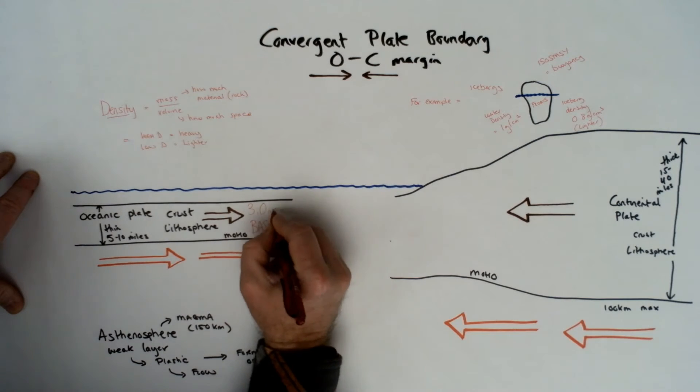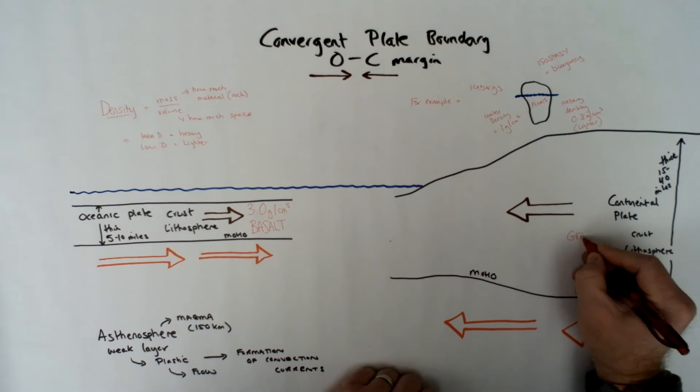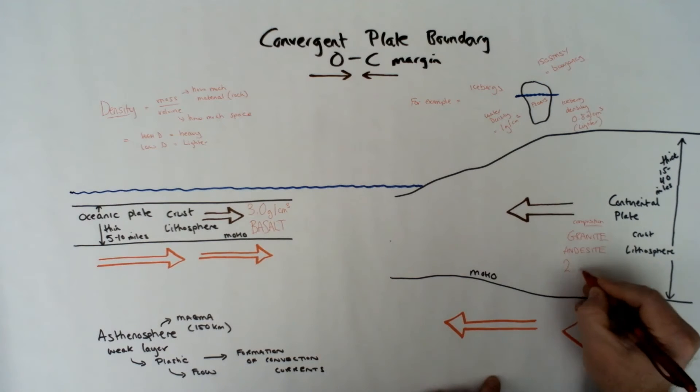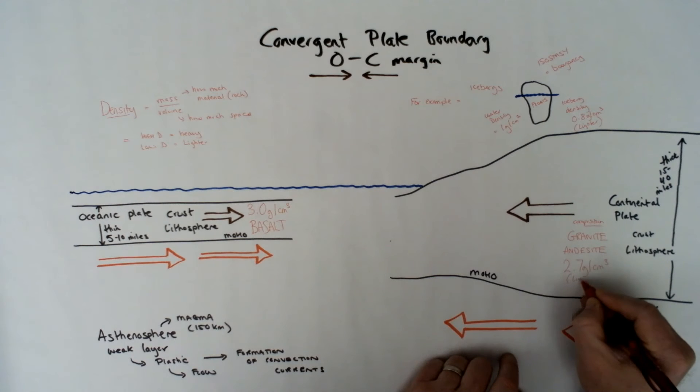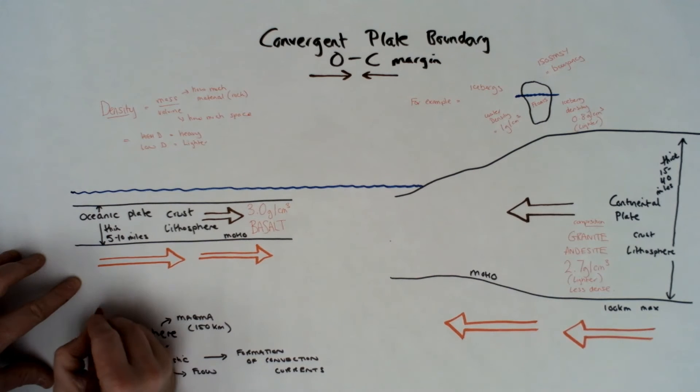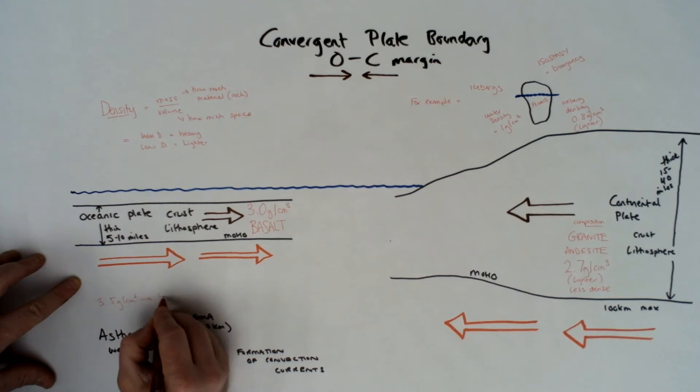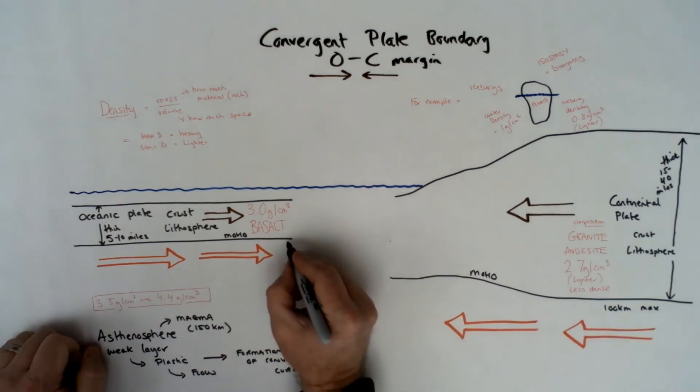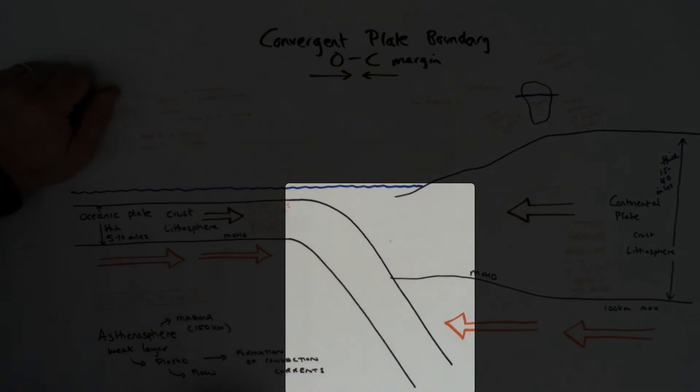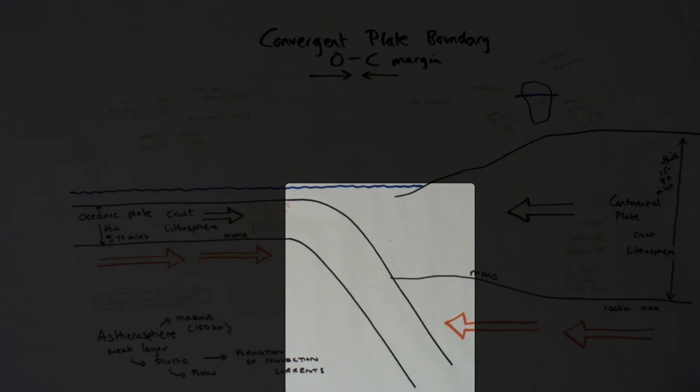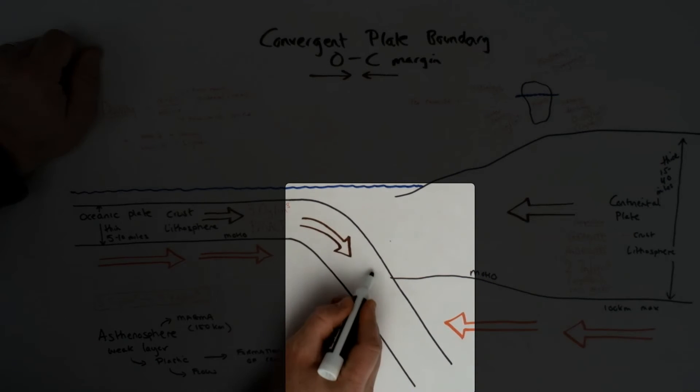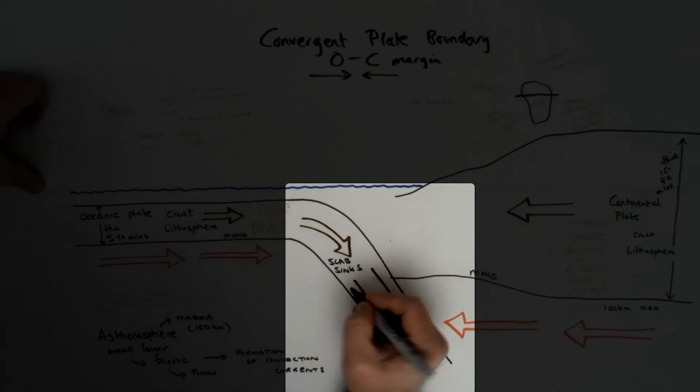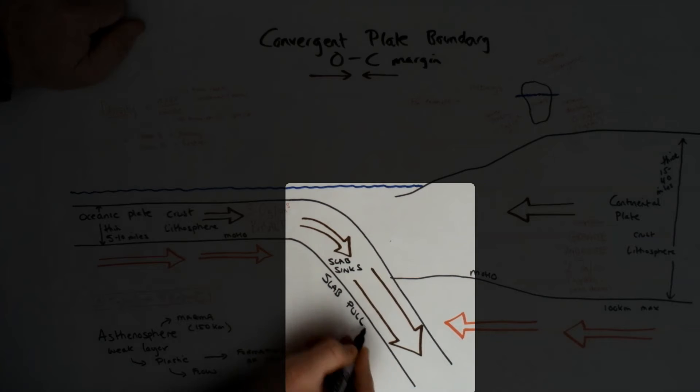Density is really important. Basalt, which is the main rock of the ocean plate, is three grams per centimeter cubed. The granite andesite continental crust or plate is an average 2.7 grams per centimeter cubed. That means the oceanic plate is denser than the continental plate. In terms of collision, the oceanic plate is going to be forced under, to sink, which is heavier through the convection currents, which is called slab pull. It's hitting against a larger plate, which is continental, and this is called subduction.